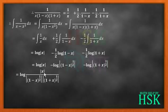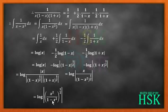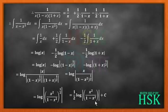Combining all three terms, I get log of x upon 1 minus x to the power of 1 by 2 into 1 plus x to the power of 1 by 2. Modulus bars are placed because the term inside a log cannot be negative. This simplifies to log of x upon 1 minus x squared to the power of 1 by 2, and further to 1 by 2 log of x squared upon 1 minus x squared plus C.